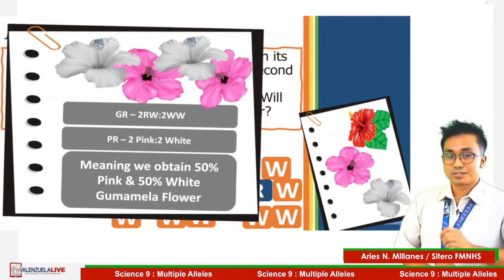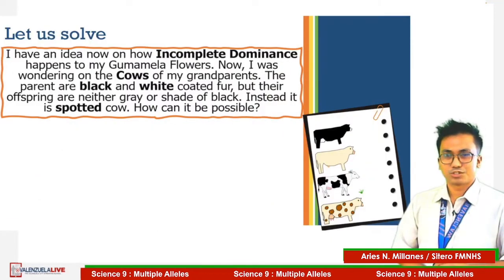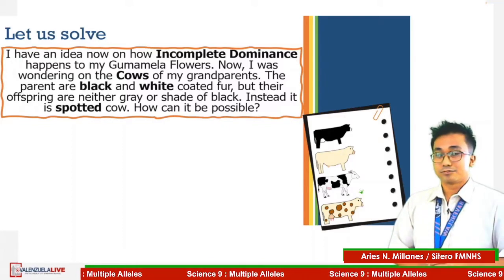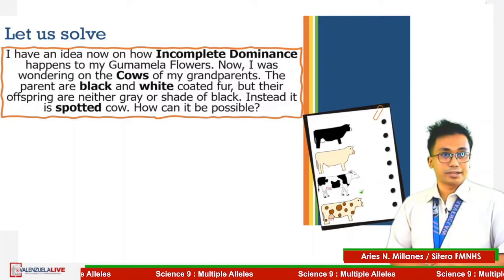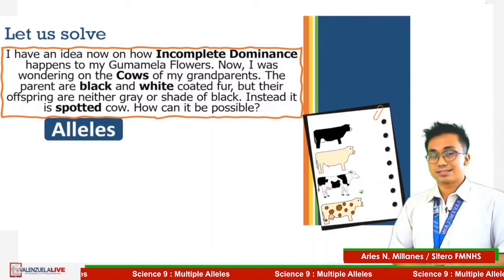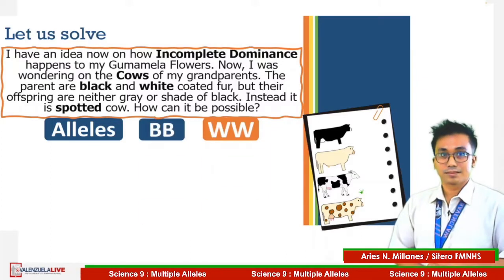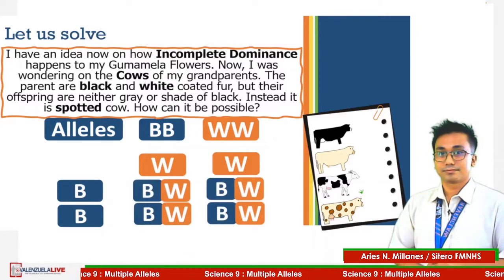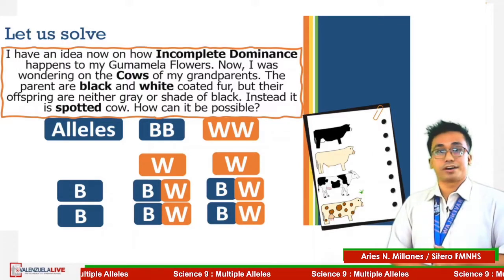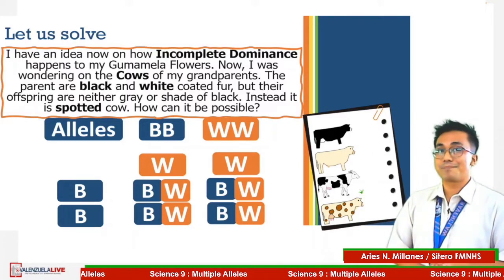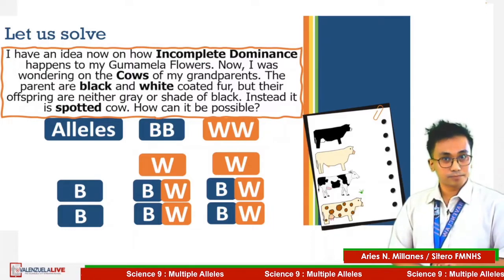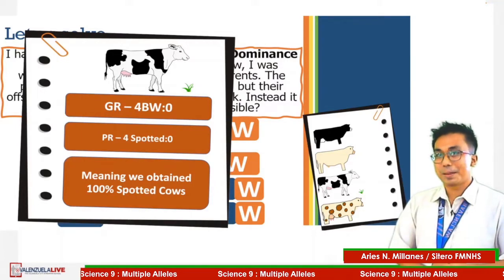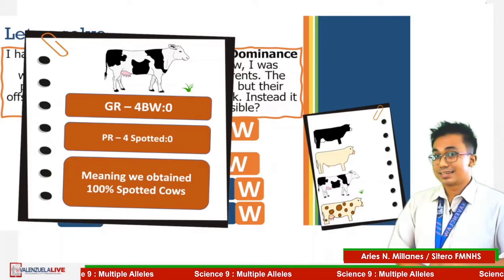Another example: try to analyze the problem, then let us solve it. First, we need the alleles. Solving it on a Punnett square will give us this data. Formulating our genotypic ratio and phenotypic ratio is now easy — we have this GR and PR. Easy, right?